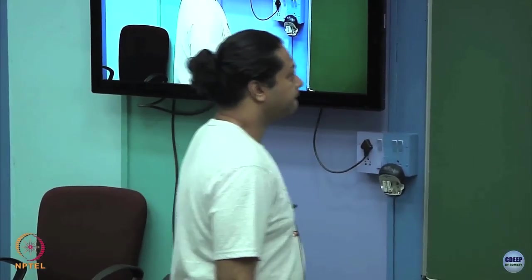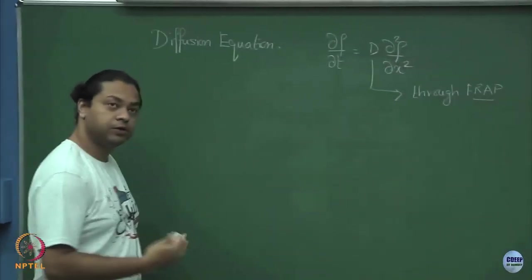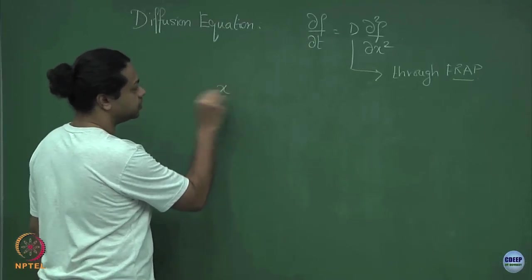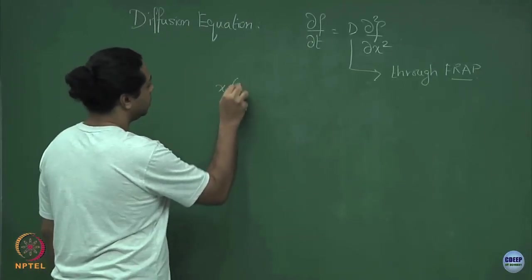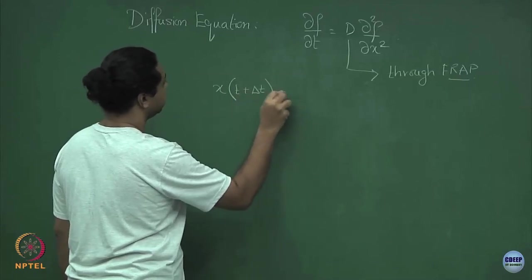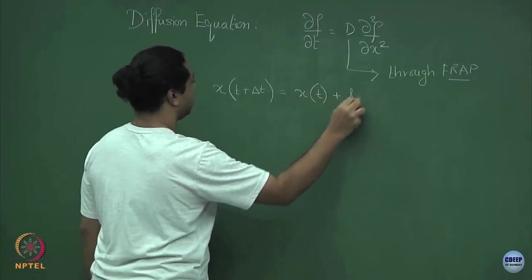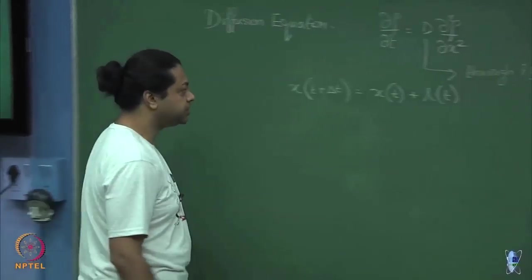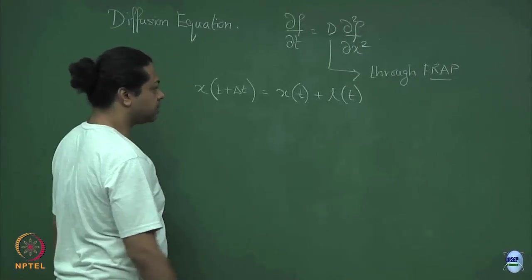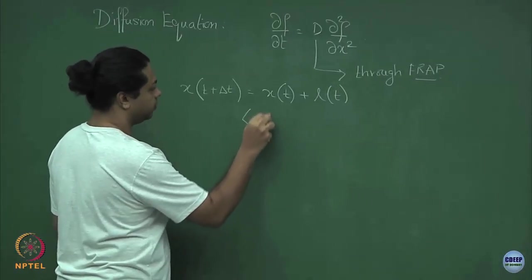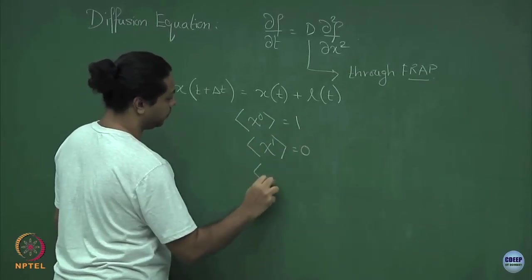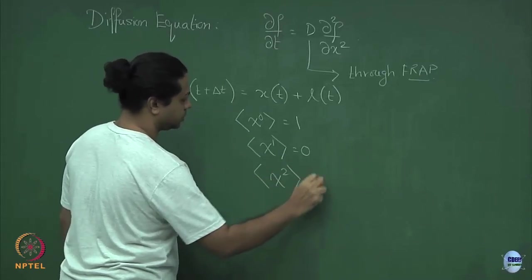When we derive this diffusion equation, if you recall, what we said was that I draw my step lengths. I wrote down an evolution for the position of the random walker at time t plus delta t, plus some step L of t, where the step sizes were drawn from a distribution which is zero mean and some constant variance. So the zeroth moment was 1, the first moment was 0, and the second moment was a squared.